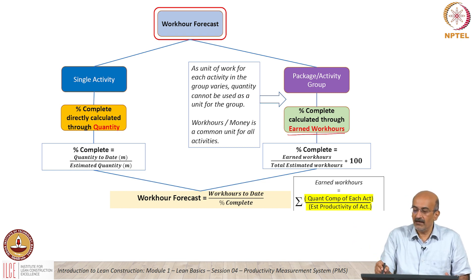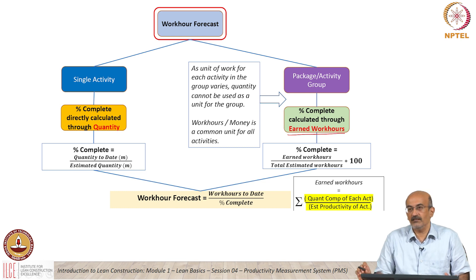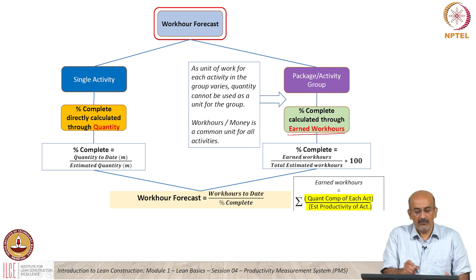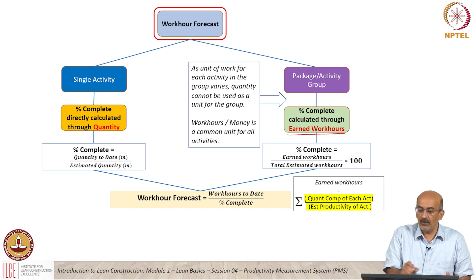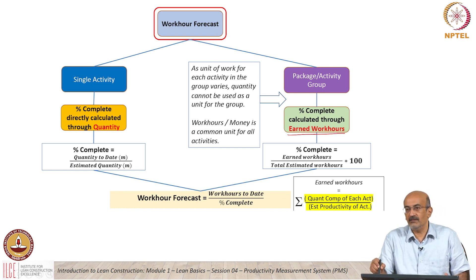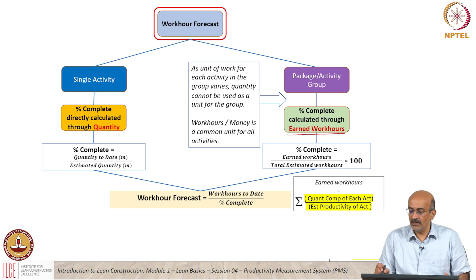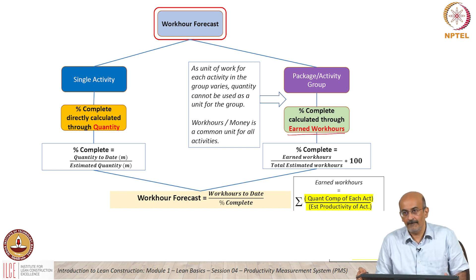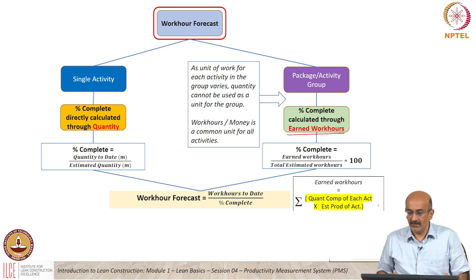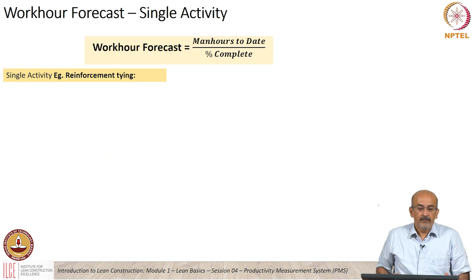We are calculating percentage complete here as earned work hours divided by total estimated work hours. Where for a single activity it is quantity by estimated quantity, here we convert all of this into equivalent work hours, and this formula remains the same. When you look at earned work hours, it is basically quantity complete for each activity multiplied by estimated productivity. We will get into an example.